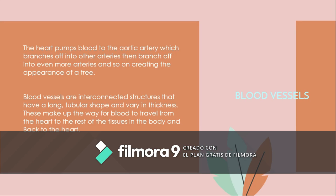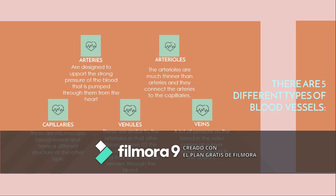Blood vessels: the heart pumps blood to the aortic artery, which branches into other arteries, then branches into even more arteries, creating the appearance of a tree. Blood vessels are interconnected structures that have a long tubular shape and vary in thickness. They make up the pathway for blood to travel from the heart to the rest of the tissue in the body and back to the heart. There are five different types of blood vessels.